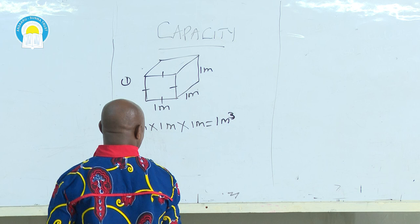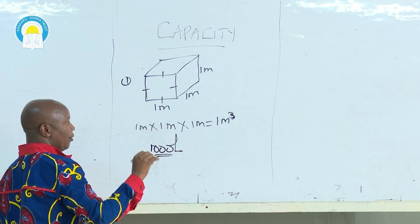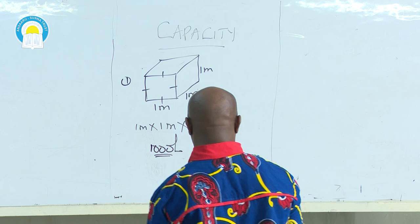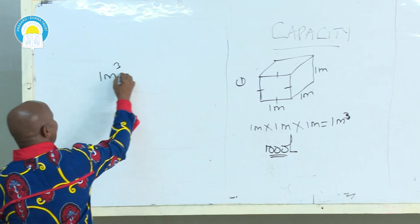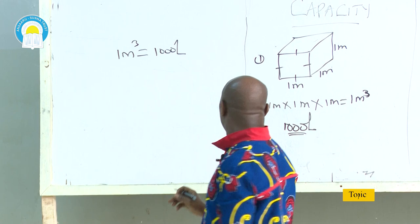The capacity of the same cube is 1,000 liters. You must understand the difference between volume and capacity. Once you get the volume, then the next answer you are going to get is capacity. In short, we normally say that 1 cubic meter is equivalent to 1,000 liters. So if our volume is 1 cubic meter, that means our capacity is 1,000 liters.